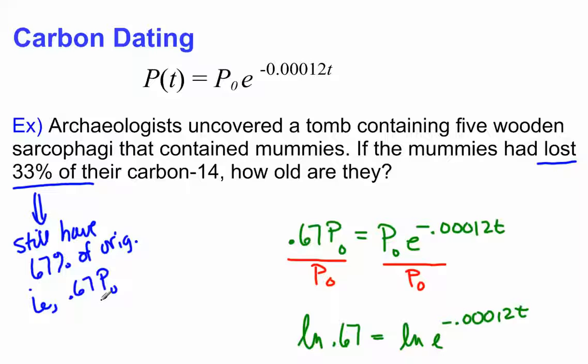So the answer here would be 67% of whatever the original was. 67% is .67 of original means times the original, so times our P sub zero. So here's our equation, .67 P sub zero equals P sub zero E to the negative .00012T.